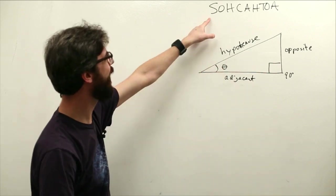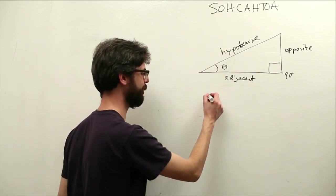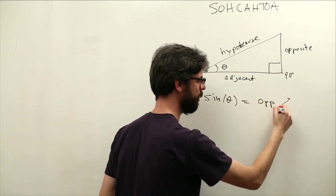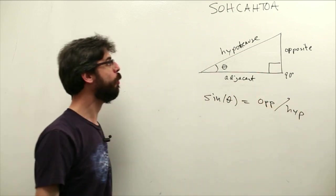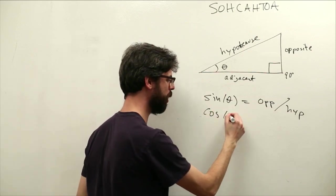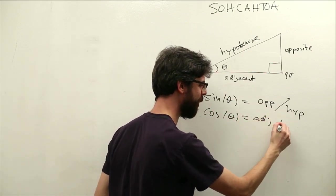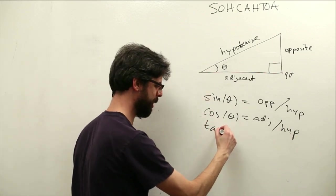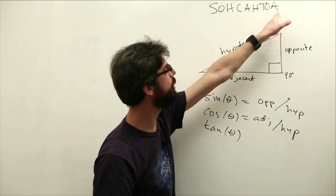Okay, what is sine? Sine is opposite divided by hypotenuse. So sine of theta is opposite divided by hypotenuse. What is cosine? Adjacent divided by hypotenuse. Cosine of theta is adjacent divided by hypotenuse. And tangent of theta is opposite divided by adjacent.